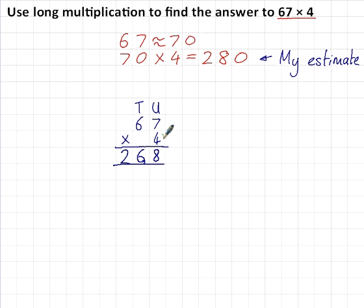7 × 4 is 28. I'll put the 20 down there and the 8 up here. Then 6 × 4, 60 × 4. 60 × 4 is 240, plus the 20 that I had there waiting, 260. 268 then is my final answer, and I'm happy with that.